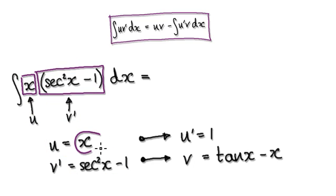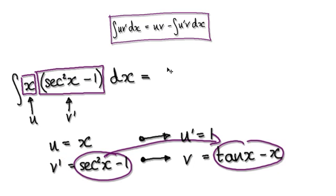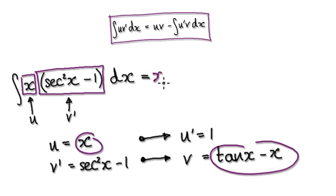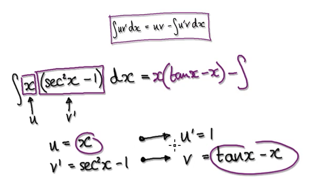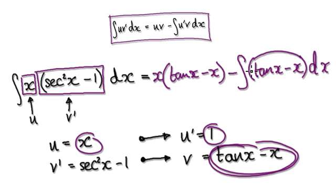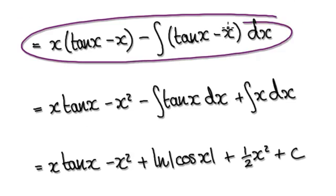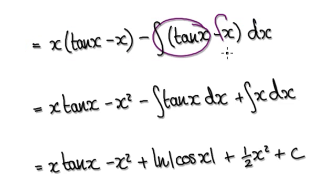Let this be u, and let this thing here be v prime. So if u equals x, then u prime equals 1. If v prime equals sec squared, then integrating it gives you tan of x. Now blindly follow the formula: get u times v, which is x tan x minus x, and then minus the integral of u prime times v — that becomes tan x minus x dx. So this is slightly easier to integrate than what we had earlier.